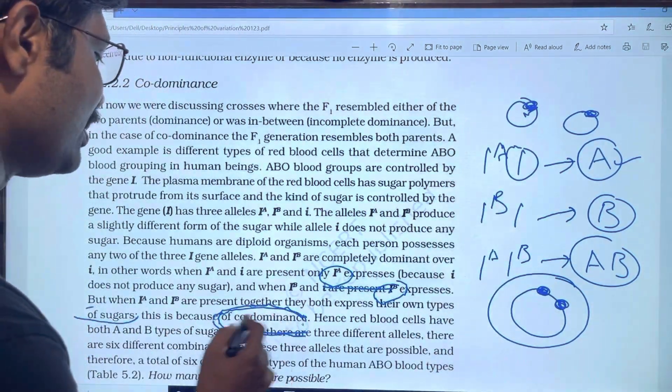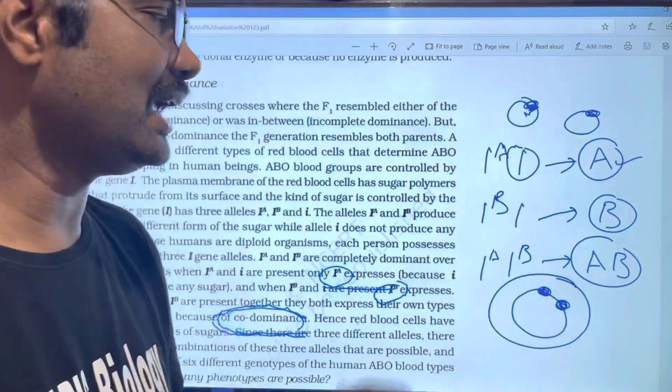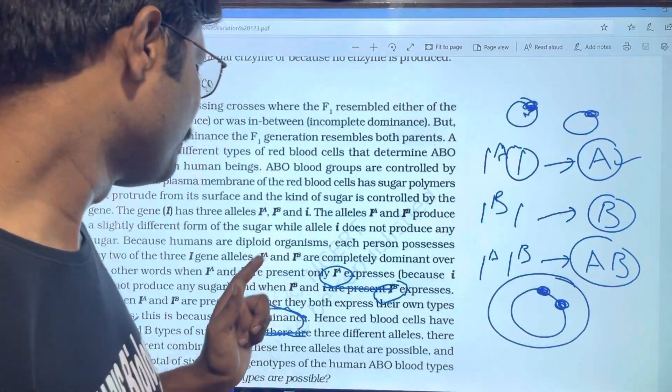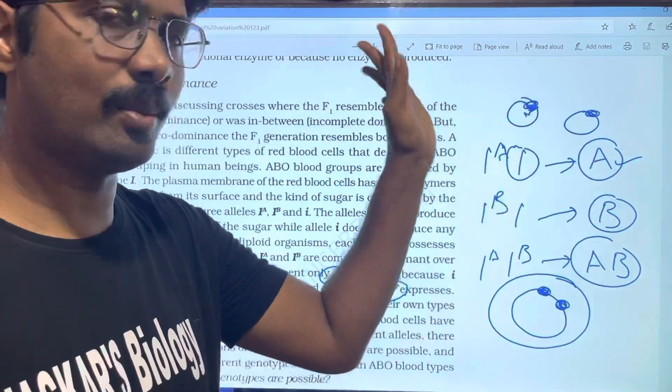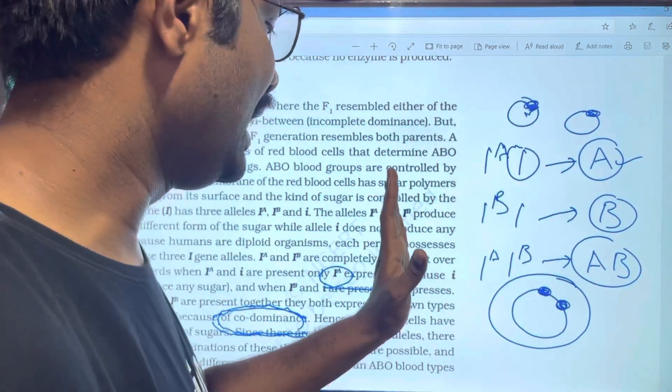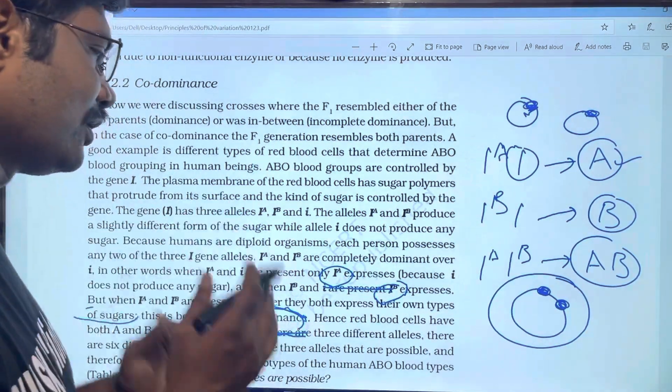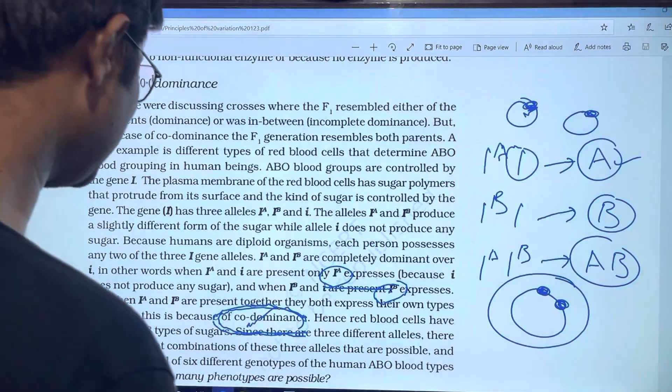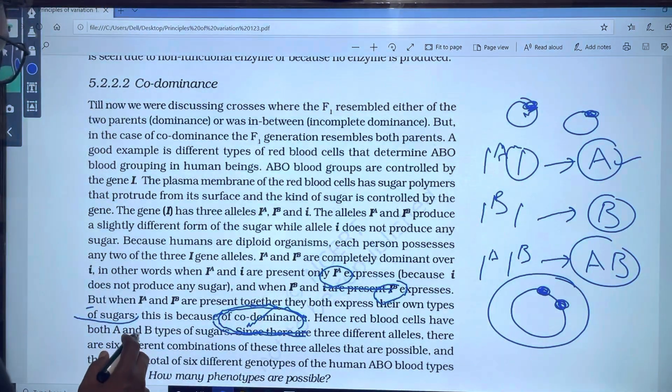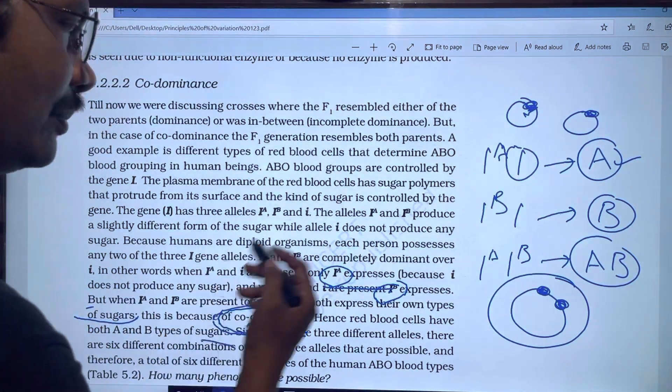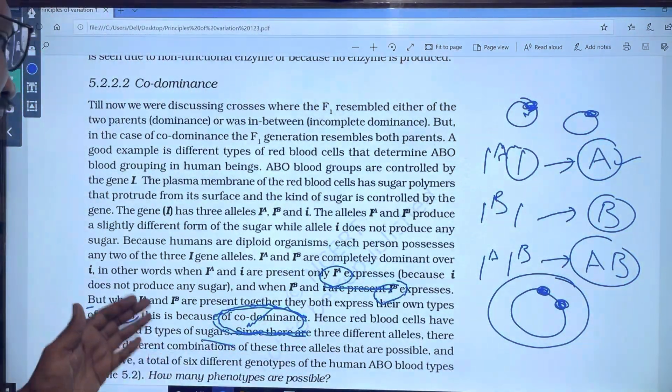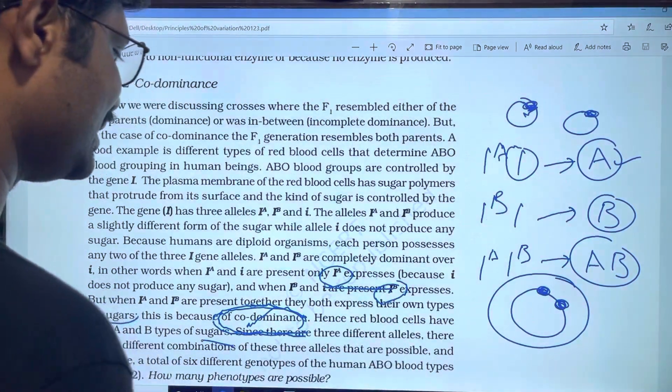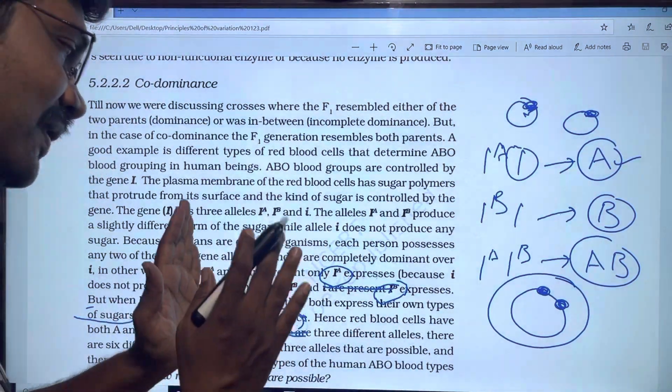IA and IB blood group means AB blood group means co-dominance. Hence red blood cells have both A and B type of sugars. Since there are three different alleles, there are six different combinations of these three alleles that are possible.